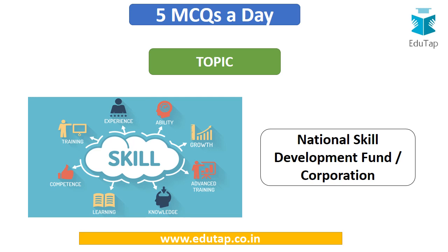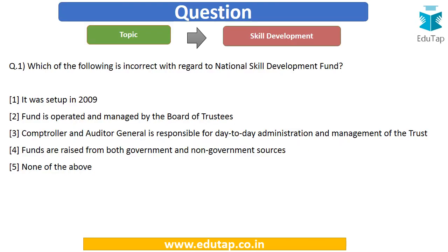Let's start with the first question: which of the following is incorrect with regard to National Skill Development Fund? This is a very important fund when you talk about skill development initiatives in the country. The options are: (A) it was set up in 2009, (B) fund is operated and managed by the board of trustees, (C) Comptroller and Auditor General is responsible for day-to-day administration and management of the trust, (D) funds are raised from both government and non-government sources.